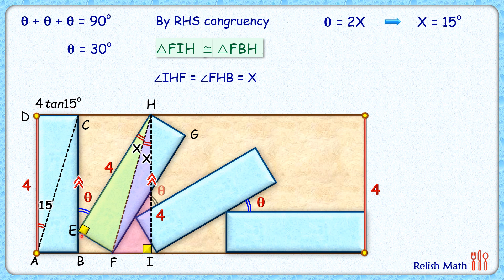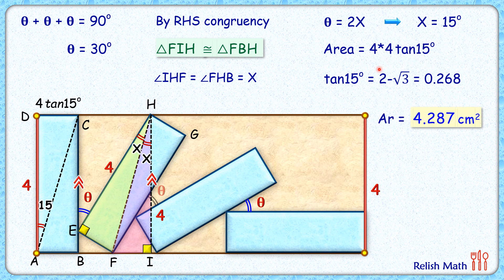Now the area of the blue rectangle is length times breadth. Length is 4, breadth is 4 times tan 15, so area is 4 times 4 times tan 15 degrees. Tan 15 degrees value is 2 minus root 3, which in decimal is 0.268. Putting this value here, we get area of each rectangle is 4.287 square centimeters, and that's our answer.